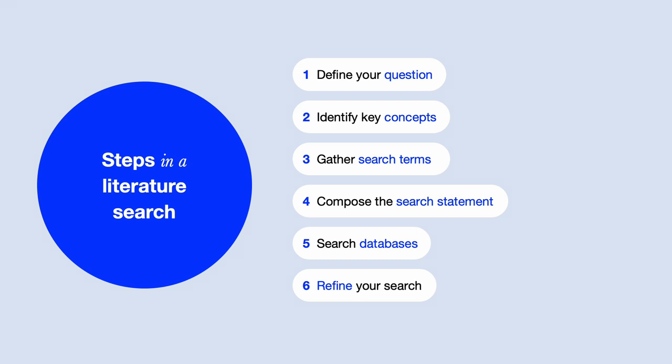A literature search involves six key steps: clearly define your research question, identify key concepts from your question, gather search terms for each concept, compose the search statement that defines the logical relationships among your search terms, use this statement to search article databases, and refine your search to improve the results. We'll use the PubMed database to demonstrate this process, and you can quickly adapt these steps for other databases with minor adjustments.